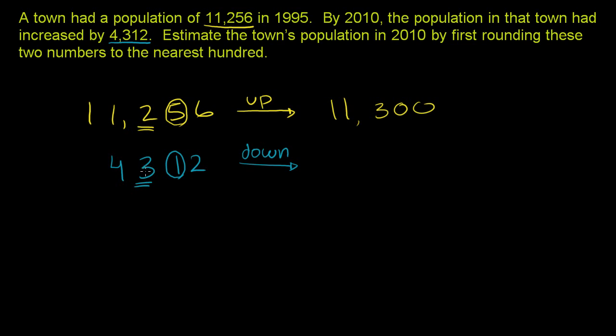1 is definitely less than 5, so we want to round down. 312 is closer to 300. We round down to just a 3 here, and these get zeroed out. So 4,300.